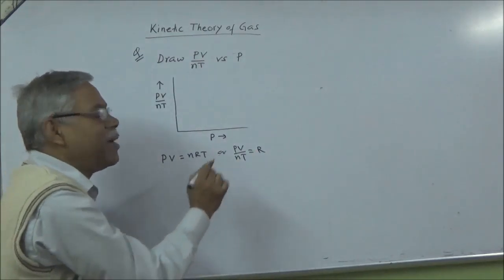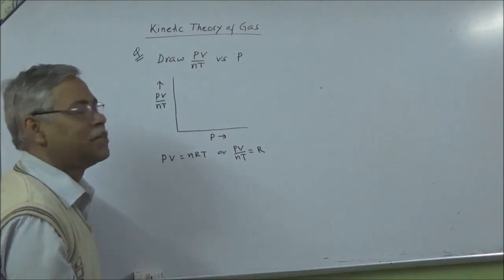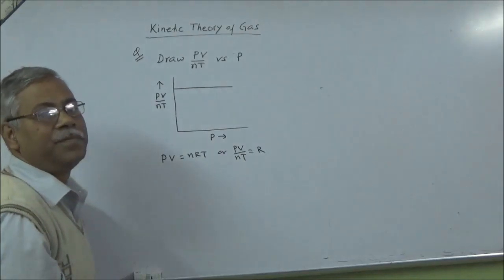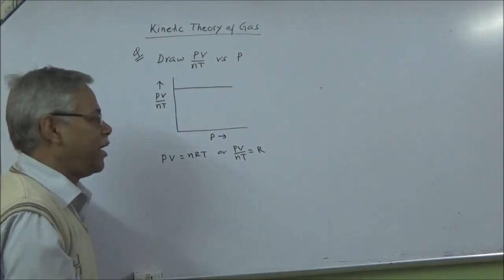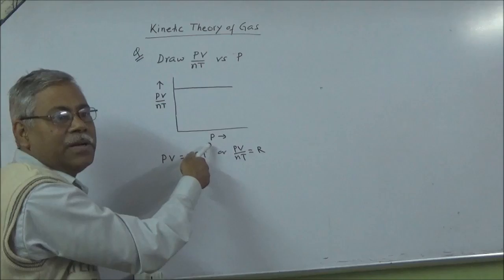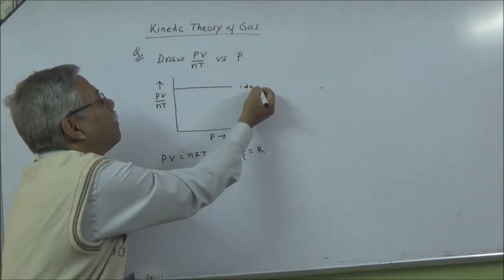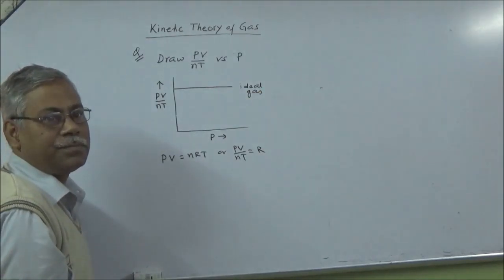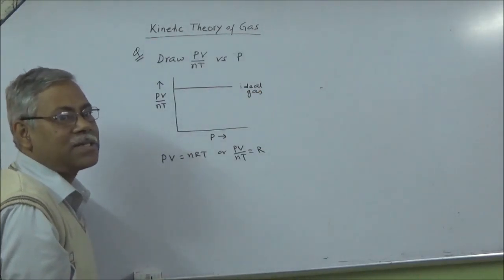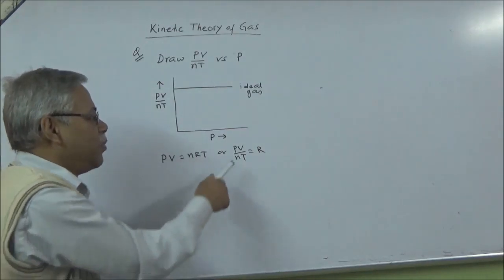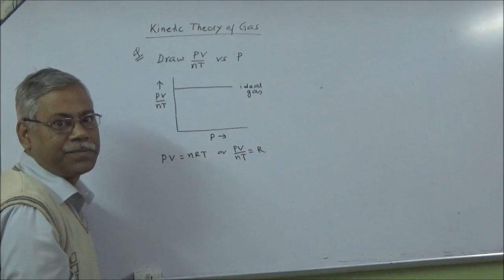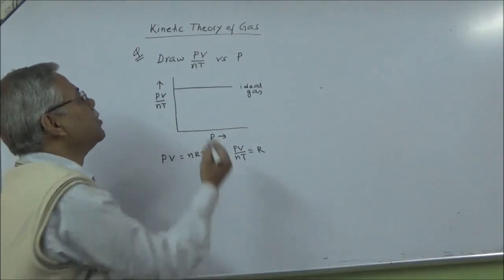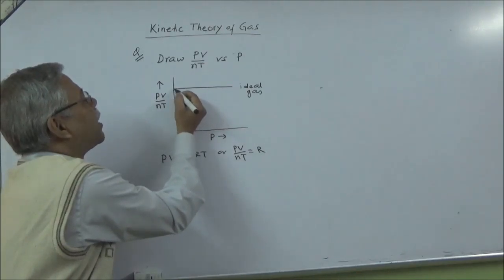For an ideal gas PV/nT is constant — it does not depend on P. But for a real gas, PV/nT is not constant. For a real gas the graph is different.